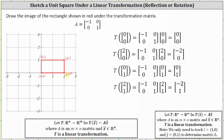Notice the transformation of the origin is equal to the origin, which indicates the point at the origin does not change under the transformation. The transformation of (2, 0) is equal to (-2, 0), which means the point after the transformation is the point negative two, zero — on the left side of the y-axis.